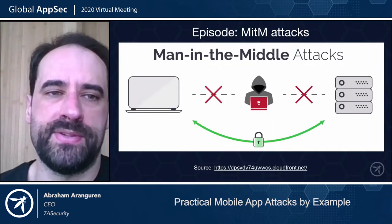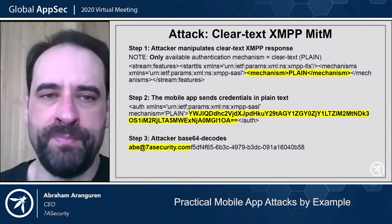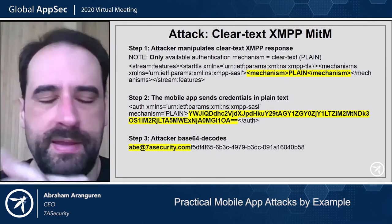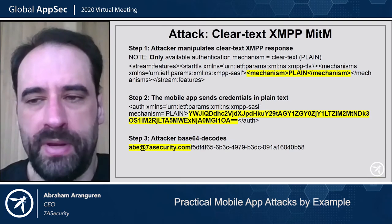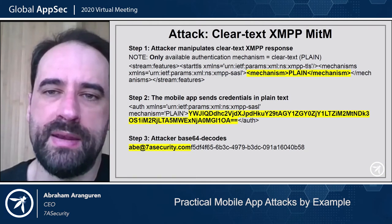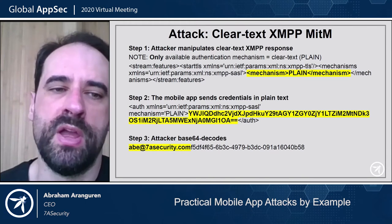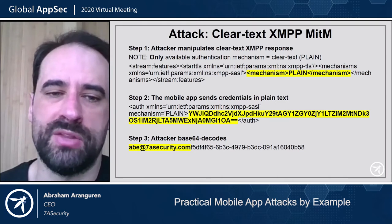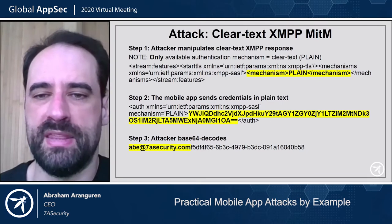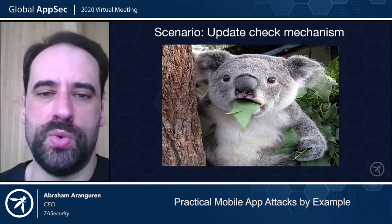Now let's look at logic bugs. For a man-in-the-middle on a secure messenger app using XMPP, you can define 'plain' as the only authentication mechanism. Because there's nothing else to fall back to, sometimes the application will say, if that's the only way I can log in, I will try. Then the credentials are sent base64 encoded, and you can base64-decode them to get the user credentials. This is how you fix this.